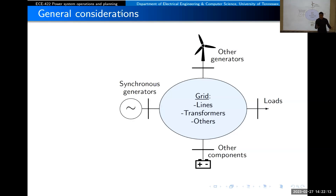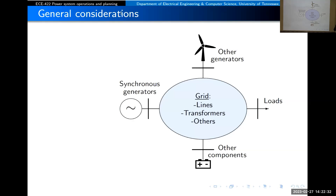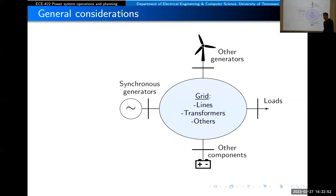The grid includes transmission lines — both AC and HVDC — transformers, and sometimes additional components needed for proper power transfer: series capacitors, shunt inductors, shunt capacitors. All of those are part of the grid and are needed for proper interconnection. What would be a good grid?